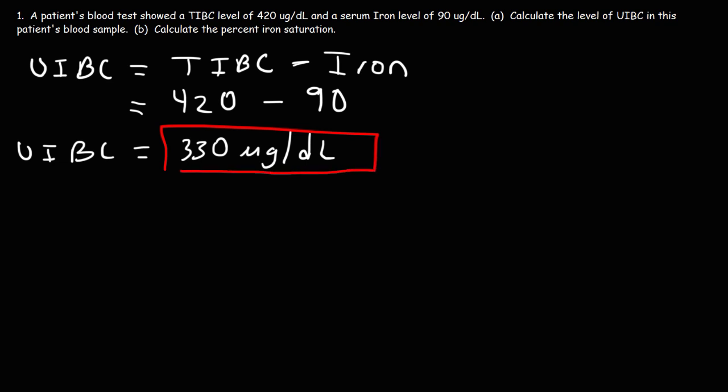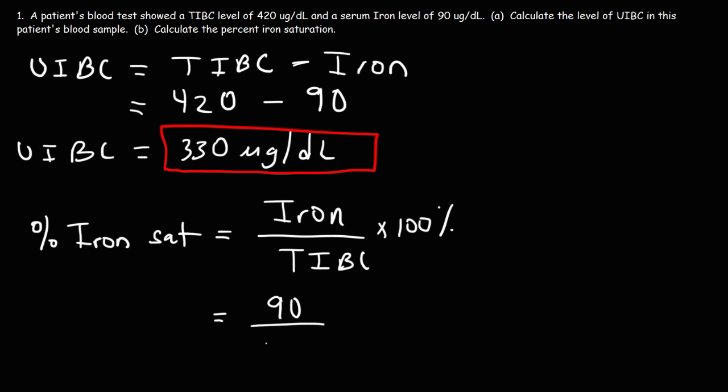It's simply the difference between the TIBC level and the serum iron level. Now let's move on to part B. Calculate the percent iron saturation. The percent iron saturation is equal to the iron serum level divided by the TIBC level times 100%. So the iron serum level is 90, the TIBC level is 420, and let's multiply that by 100. So this is going to be 21.4%. So that is the iron saturation level.